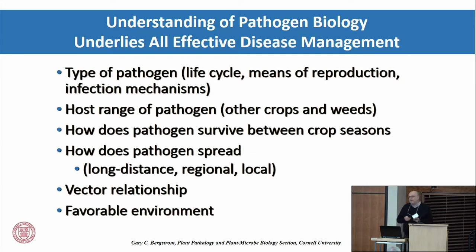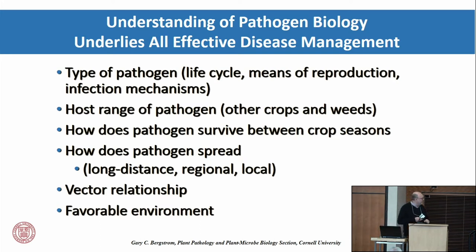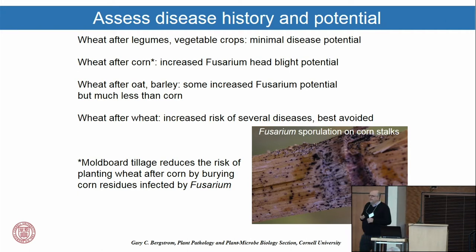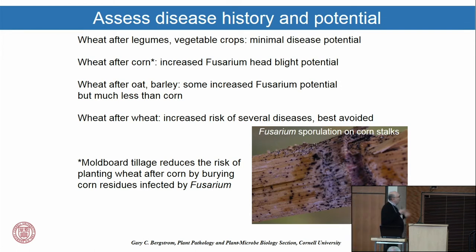Some diseases have a relationship with a vector — some virus diseases have to be spread by an insect or other organism. Top of the list is what is the favorable environment for a particular plant disease. In the eastern and north-central United States, we don't have nearly the problem with soil-borne diseases on wheat that they have in places like North Dakota or Washington State, because we don't grow wheat after wheat. So wheat in rotation with legumes and vegetable crops means minimum disease potential. The tremendous diversity in organic farming is helpful on this.